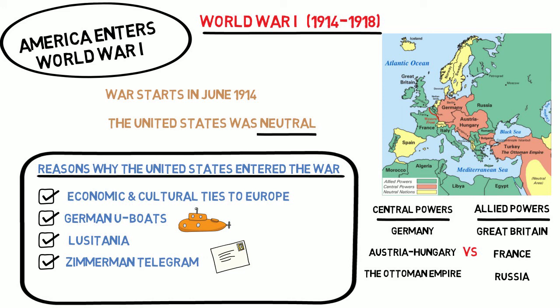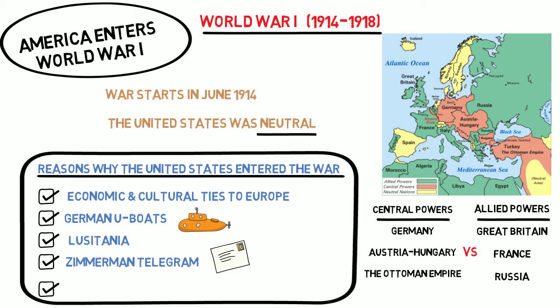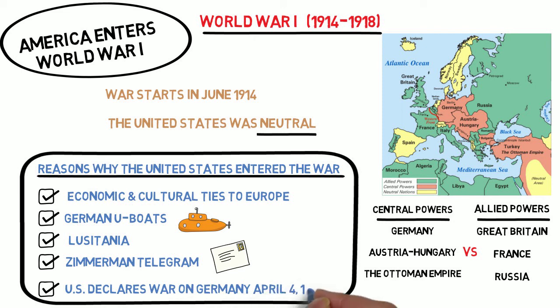Outraged, the American public now favored war against Germany. On April 2, Woodrow Wilson called a special session of Congress together, and on April 4, Congress passed a declaration of war against Germany. The United States now had to prepare for a total war.